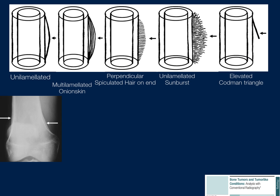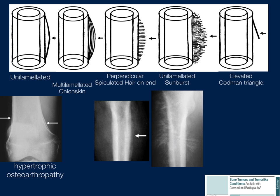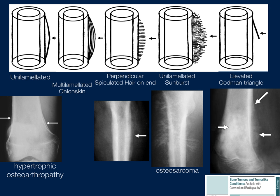Some examples: on the left, a well-defined periosteal reaction seen in hypertrophic osteoarthropathy, which can be seen in patients with lung cancer. Then a perpendicular, spiculated hair-on-end lesion. Even more aggressive is osteosarcoma, and the most aggressive being the Codman triangle.